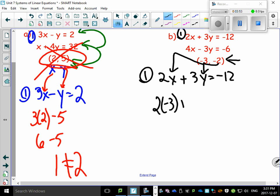2 times minus 3 plus 3 times minus 2. 2 times minus 3 is minus 6. 3 times minus 2 is minus 6. Minus 6 and minus 6 is minus 12. And lo and behold, that's what we wanted to work out to. So, so far we're okay.